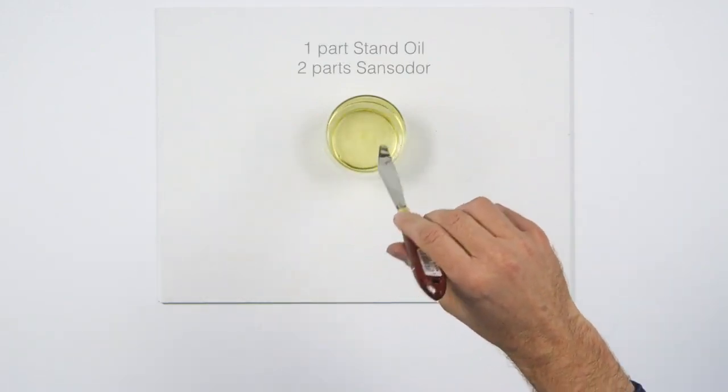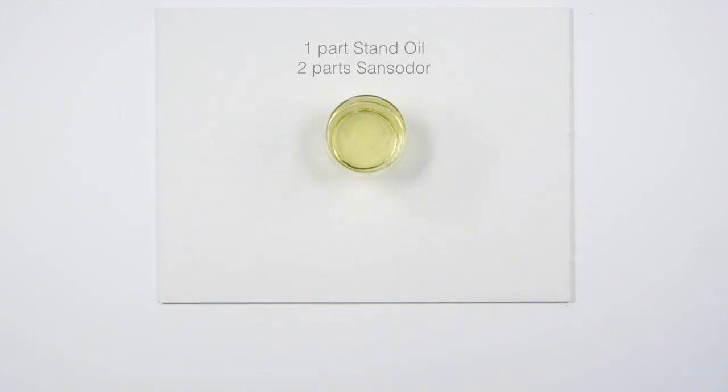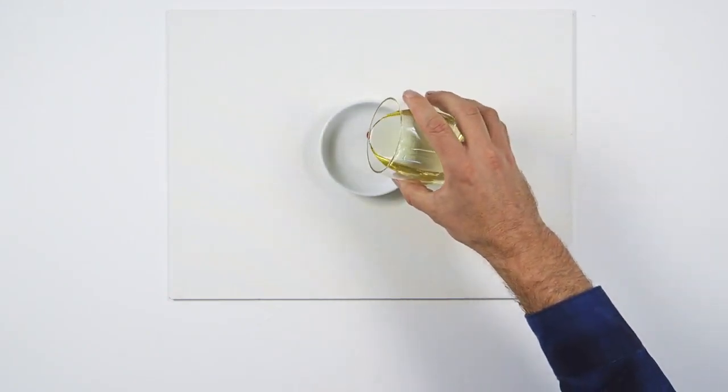I'm making a mixture of one part stand oil to two of Sansador to give me a glazing vehicle with an extended drying time. I'll thin this color with the mix.